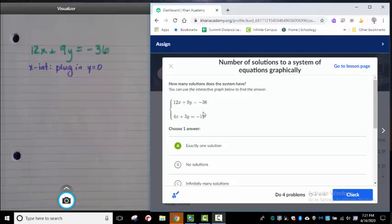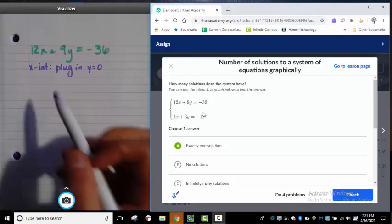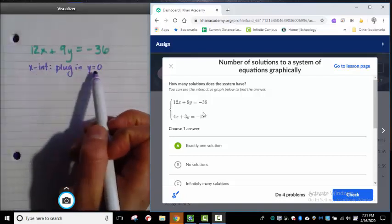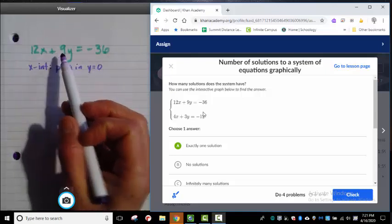So I just want to remind you how we graph in standard form. Because the easiest way is to find x and y intercepts. Over here in my paper I've written x intercept plug in y equals 0. So that's what I'm going to do here first.